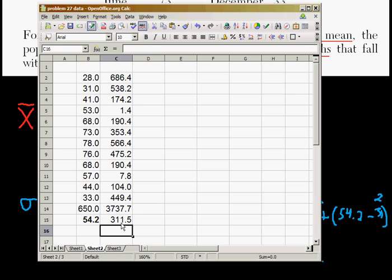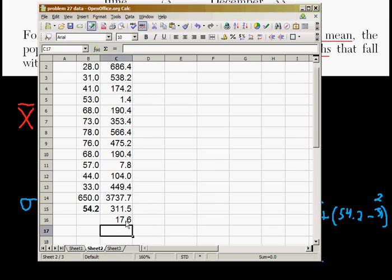But I want the square root of 31.5. So now I go equals, and then there's a command, S, Q, R, T, for square root. And then I just select this. Close the parentheses. And bam, there we go. 17.6. That is the answer we're looking for. That's the standard deviation.